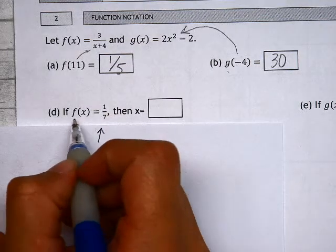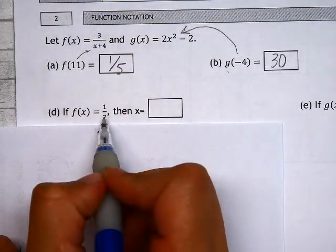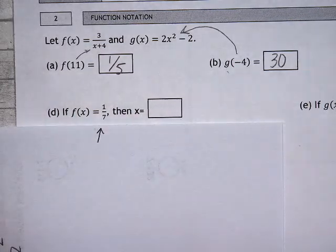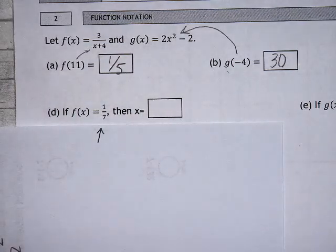So they want to know, if the answer to f of x comes out to be 1 seventh, what did they have to plug in? There are a few different ways you could try to think backwards and solve this.